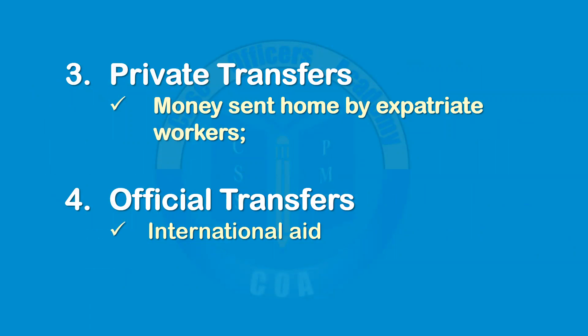Other components of the current account include private transfers — money sent home by expatriate workers. This is a very important source of finance for developing countries, where much of the workforce is in developed countries and sends money home as remittances. Another component is official transfers, which includes aid from international bodies like the World Bank and the IMF, and even from countries like the United States giving aid to other nations. This is also a source of foreign exchange for developing countries and is part of the current account.